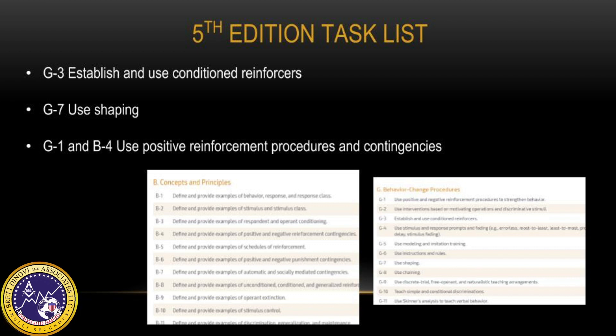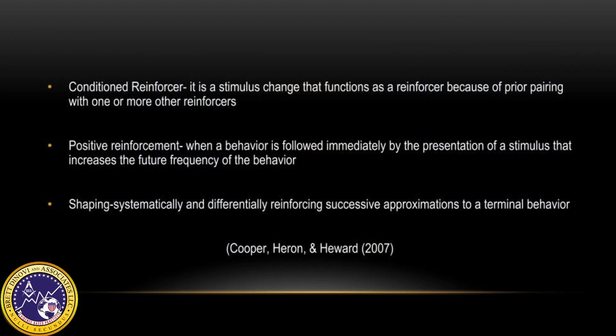I will continue to discuss how you could use it in your own sessions. This video will cover 5th edition task list topics G3, G7, G1, and B4. A clicker is a conditioned reinforcer, which can be found under the 5th edition task list G3. It is a stimulus change that functions as a reinforcer because of prior pairing with one or more other reinforcers.